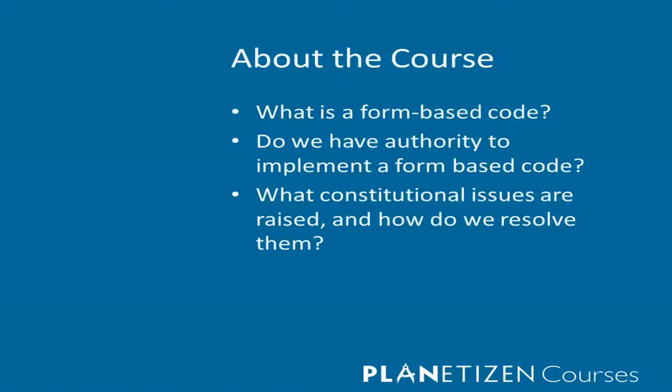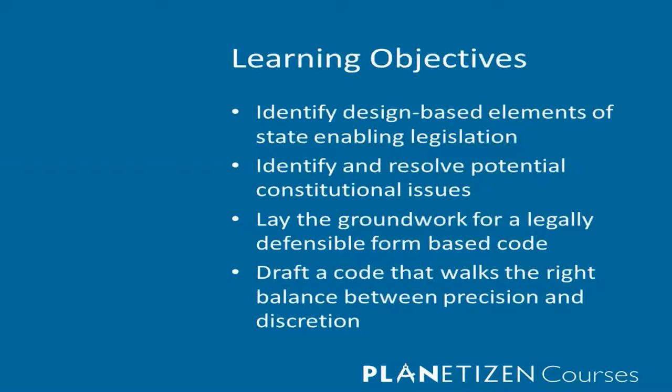I'm going to talk briefly about what a form-based code is and what it isn't. I'm going to talk about authority issues — things you need to look at and how you explore in your communities whether you have the legal authority from your state to write form-based codes — and I'm going to cover constitutional issues. What you'll walk out of here with are ways to identify design-based issues. I like to use the term design-based as opposed to form-based, since form-based codes generally deal with physical design as their organizing principle. We'll cover how to resolve constitutional issues, how to lay the groundwork for a code that works well on the ground, and how to walk the line between precision and discretion.